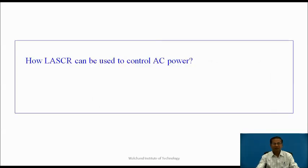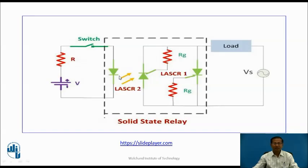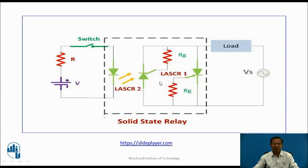How can LASCR be used to control AC power? In this circuit, two LASCRs are used: LASCR1 and LASCR2, connected in anti-parallel. During the positive half cycle, LASCR1 is forward biased, and during the negative half cycle, LASCR2 is forward biased. When the switch is closed and input voltage is applied, the photodiode conducts and emits light. During the positive half cycle, LASCR1 conducts and current flows through Vs, load, and LASCR1. During the negative half cycle, LASCR2 conducts and current flows in the anti-clockwise direction. In this way, the two LASCRs control power in both half cycles.